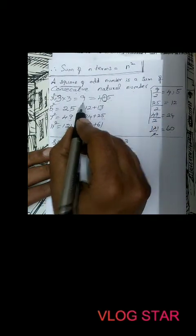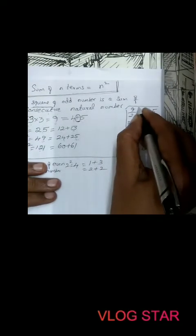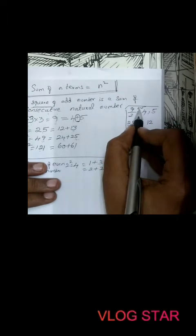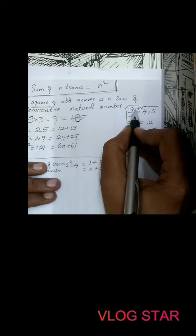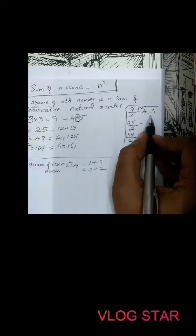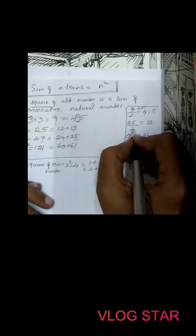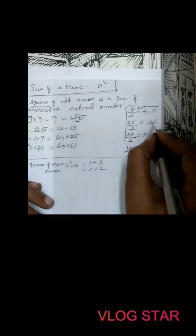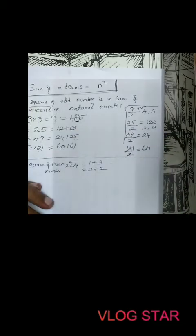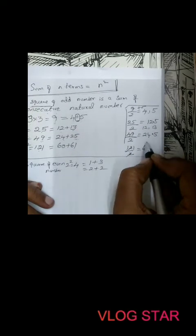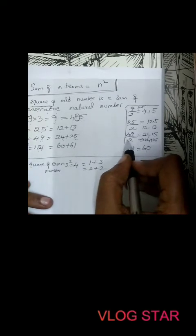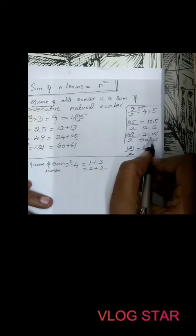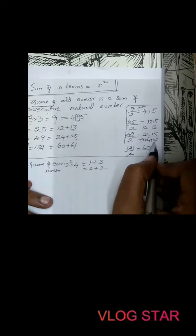Now you may wonder how to find exactly which two numbers to use. I will tell you: whatever the square number is — take 9 for example. When you divide 9 by 2, you get 4.5. So you should write the two consecutive natural numbers that 4.5 lies between, which are 4 and 5. For 25 divided by 2: you get 12.5, which lies between 12 and 13 — so the sum is 12 plus 13. For 49 divided by 2: you get 24.5, so we write 24 plus 25.